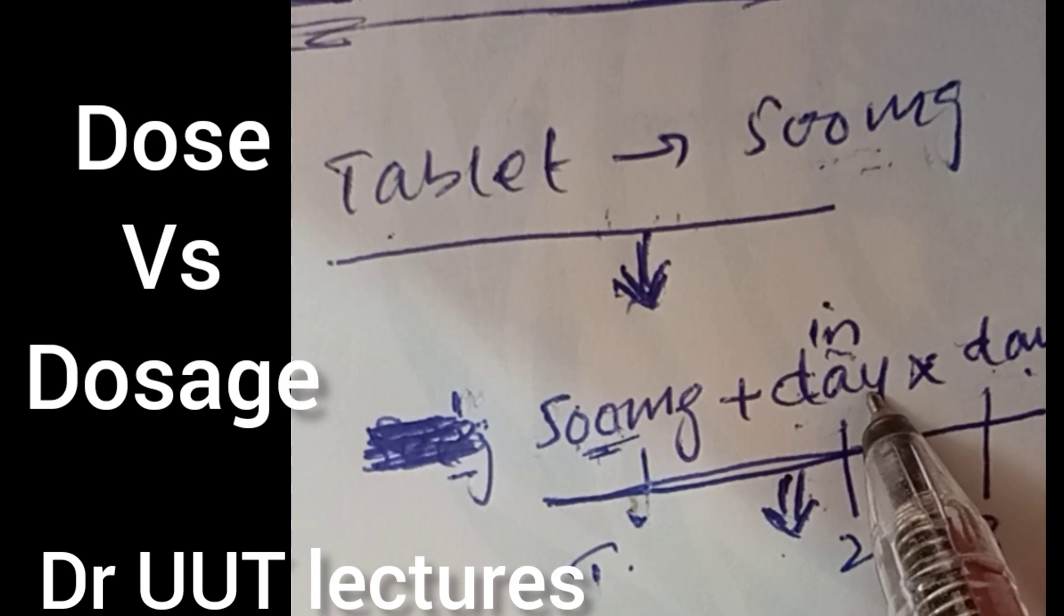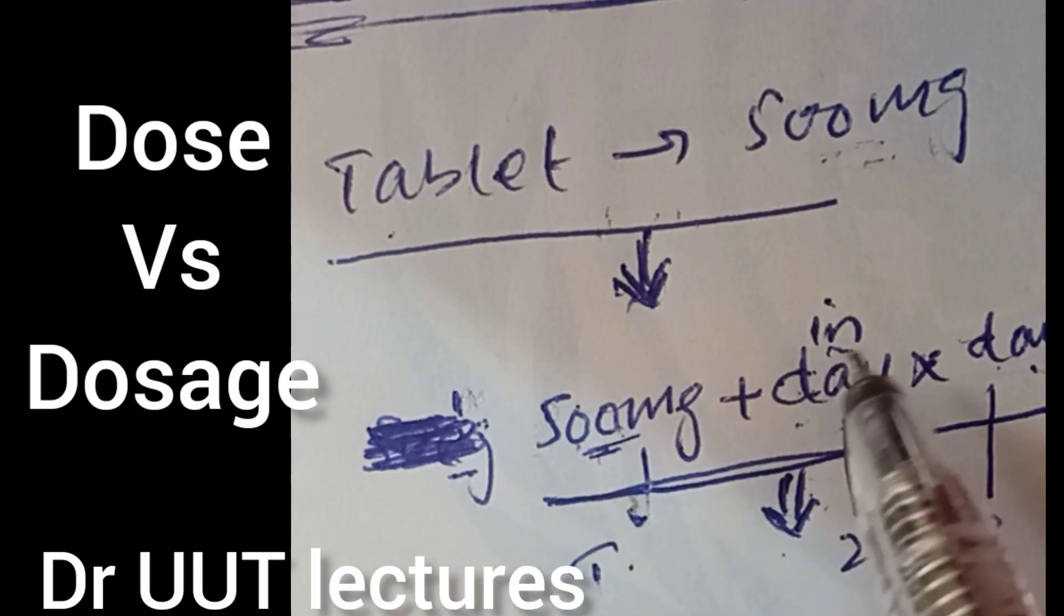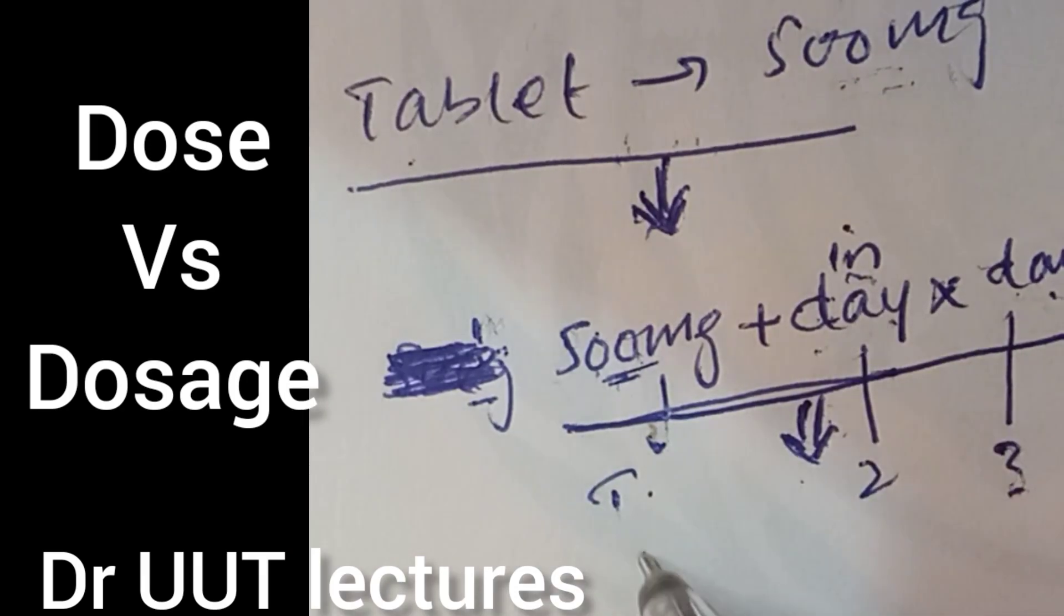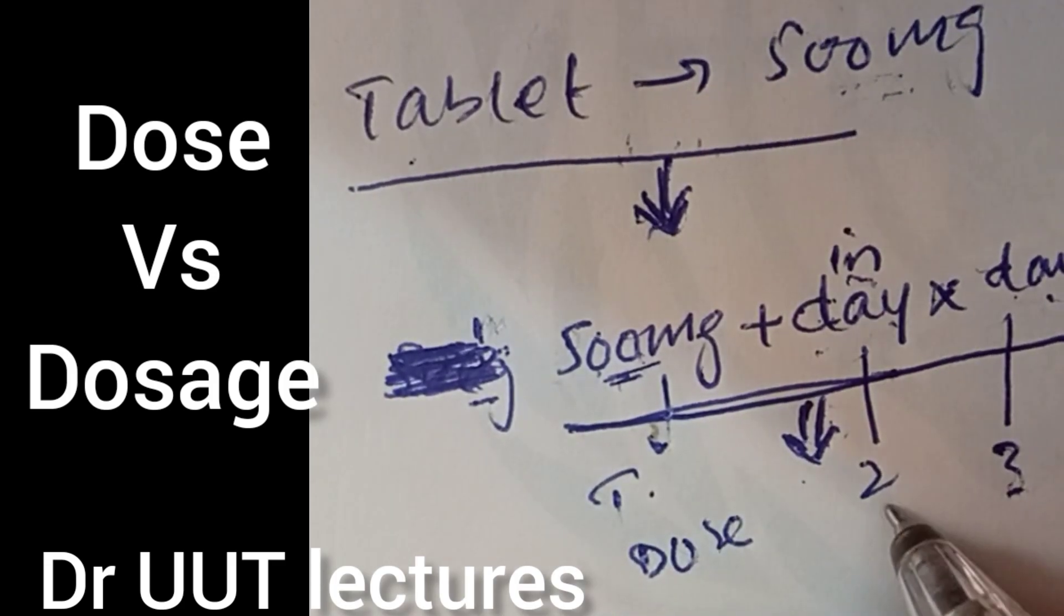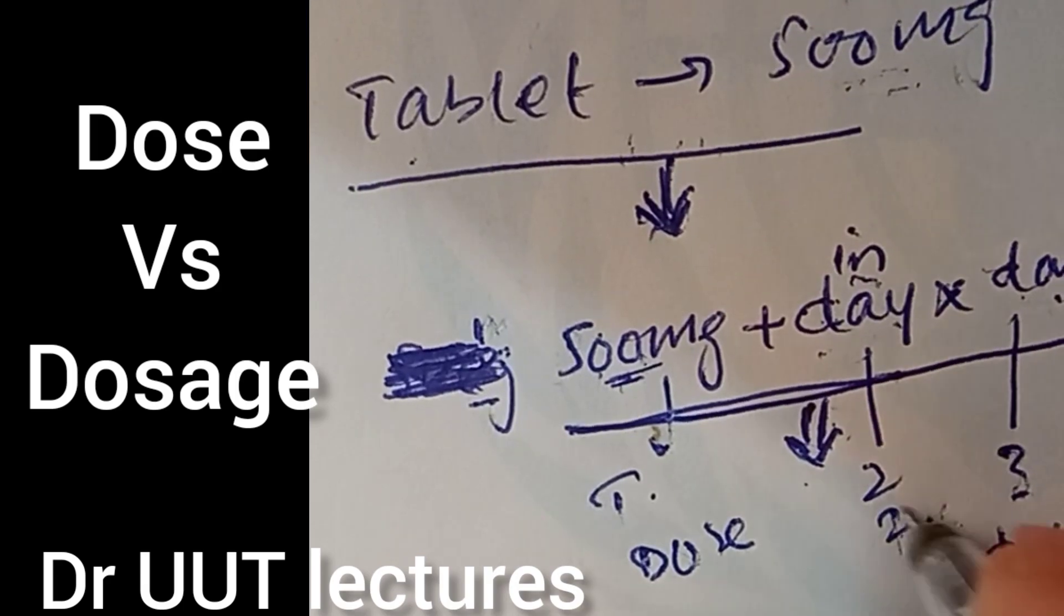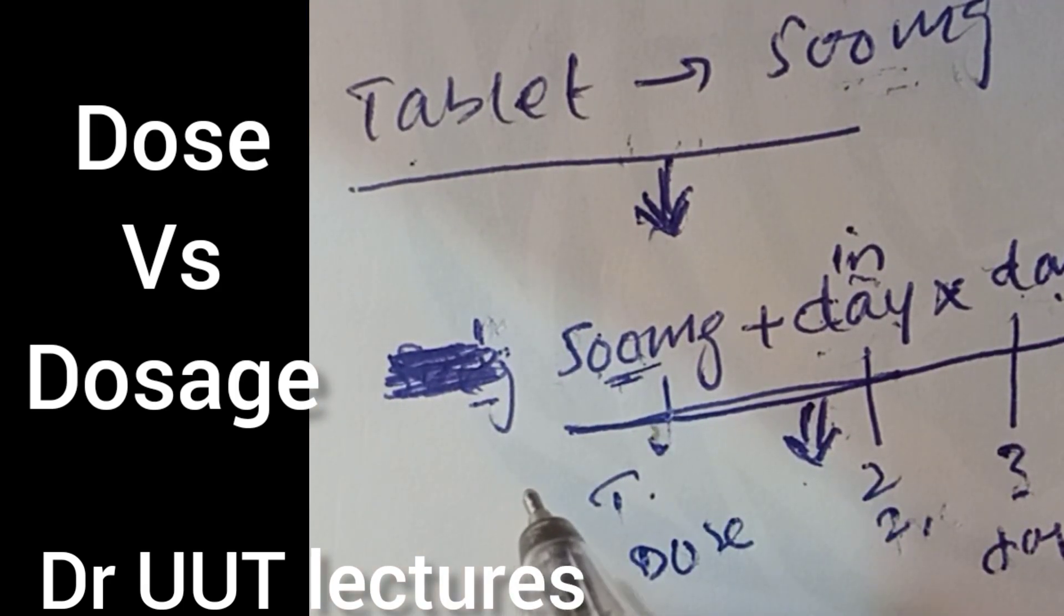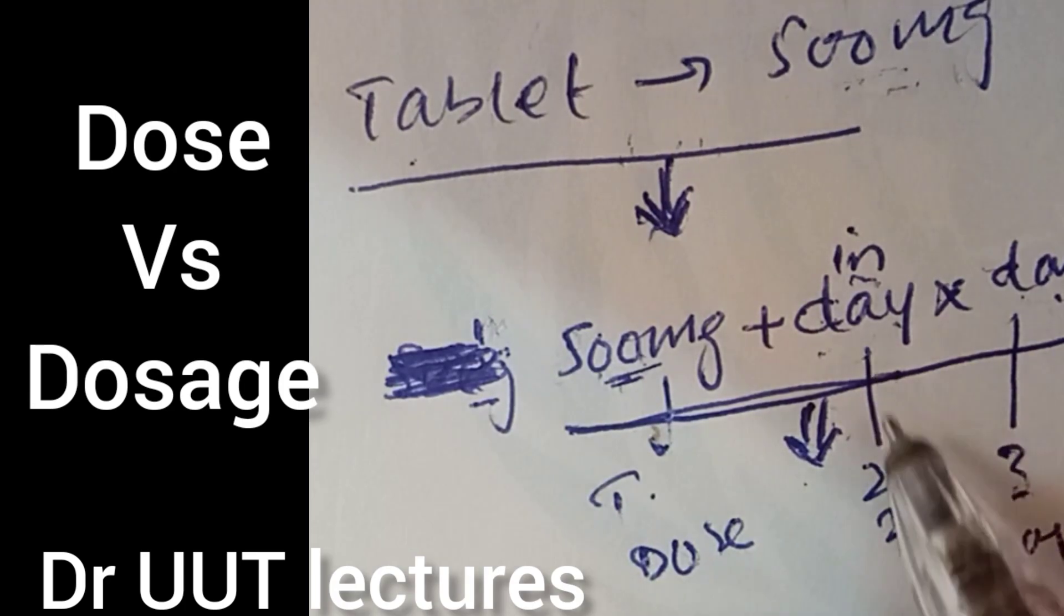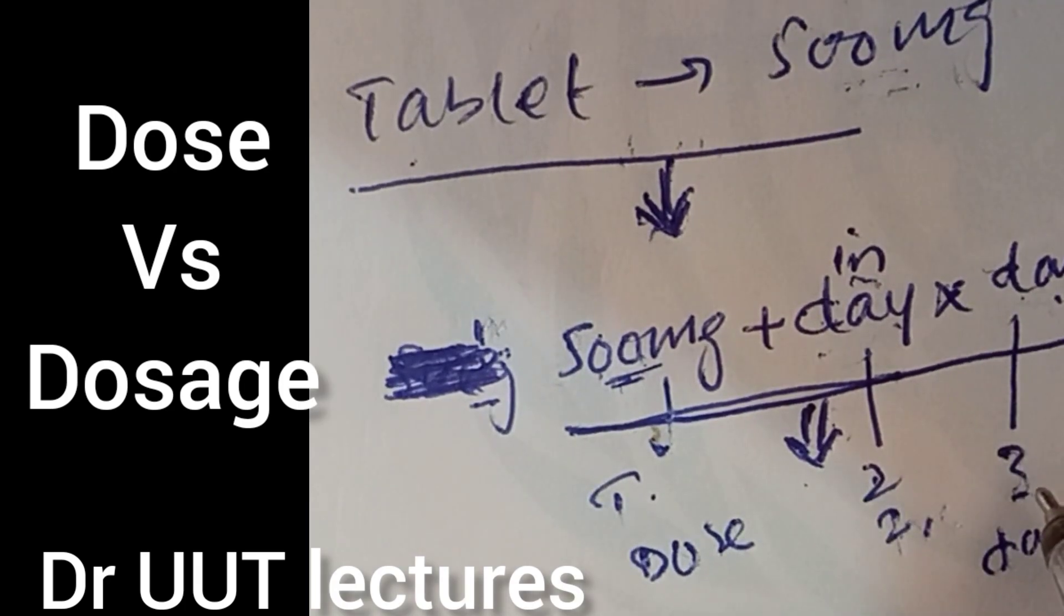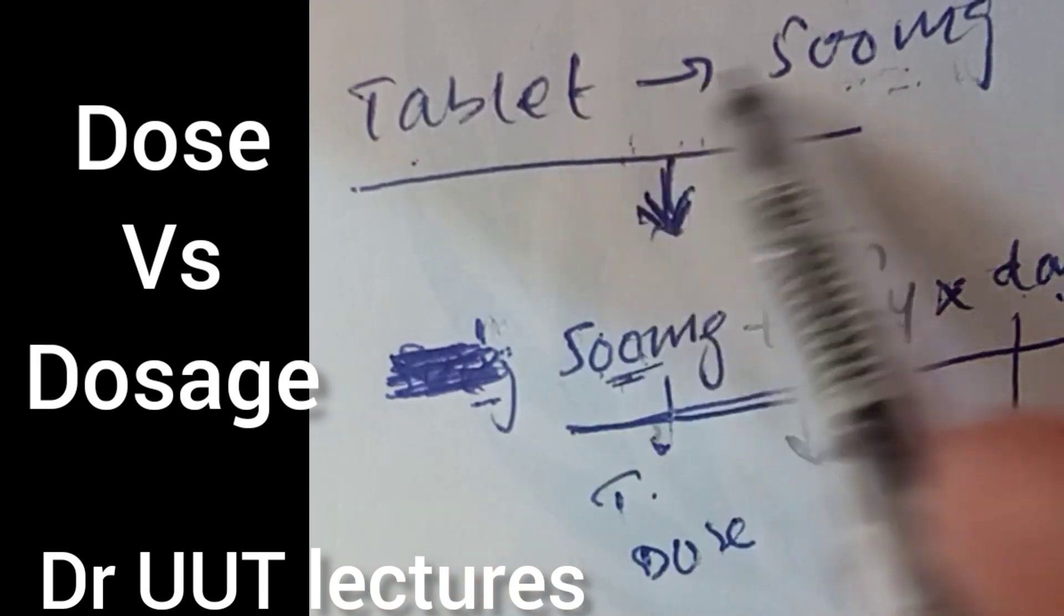How long in a day is the frequency. So dose, frequency, and days - all these combined together make the dosage. Dosage is the dose, frequency of the dose, and times that you take a particular dose for how many days.